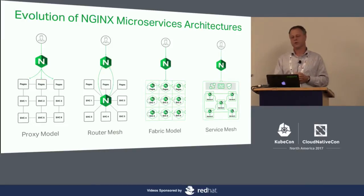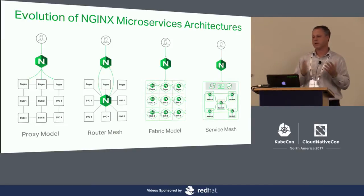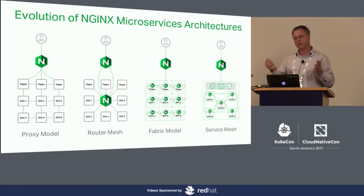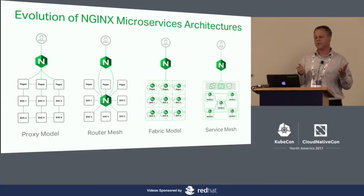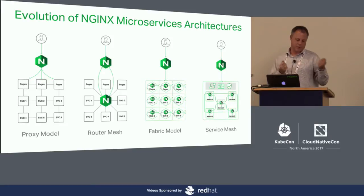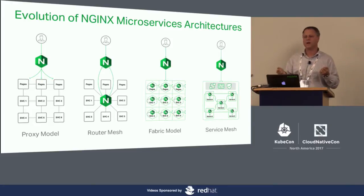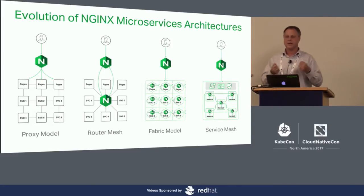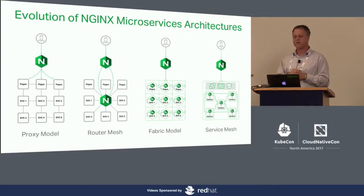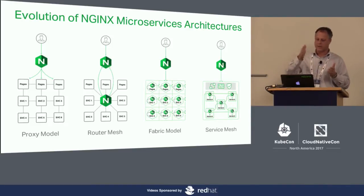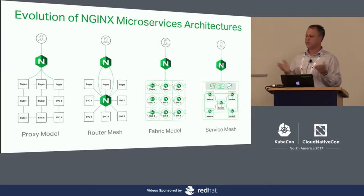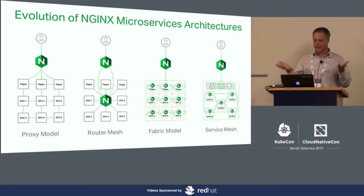The second is the router mesh. The router mesh is where you're taking a monolithic application and beginning to peel it off into microservices. You end up in a situation where different environments are working together — maybe half your applications are VM-based and the other half you're moving into microservices. You'll have an ingress load balancer that handles the traffic, and then you spread the traffic inside the microservice for management, using an ingress controller in the Kubernetes environment.